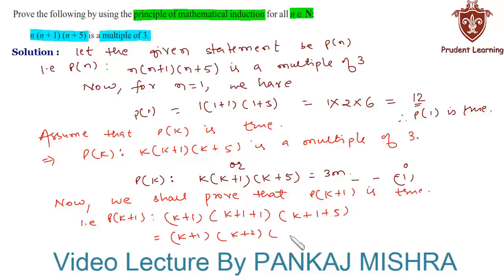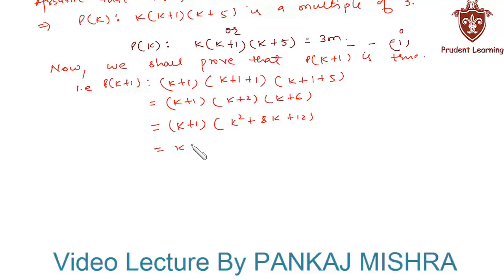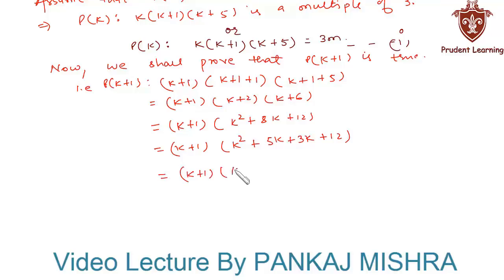We keep (k+1) as such and multiply (k+2) and (k+6) together to get k²+8k+12. So P(k+1) equals (k+1) times (k²+8k+12), which can also be written as (k+1) times (k²+5k) plus (k+1) times (3k+12).